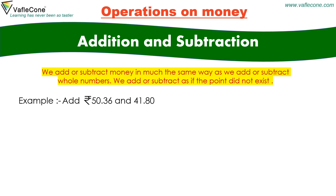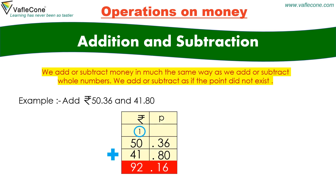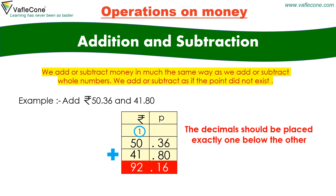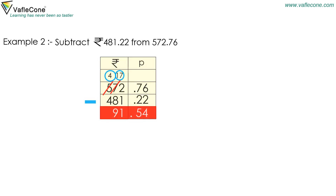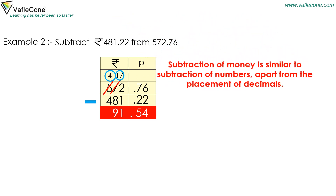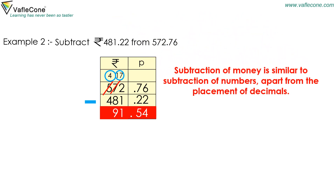add rupees 50.36 and 41.80. The decimals should be placed exactly one below the other. So the answer is rupees 92.16. Subtraction of money is similar to subtraction of numbers apart from the placement of decimals. So the answer is rupees 91.54.